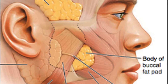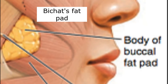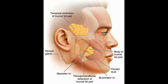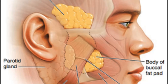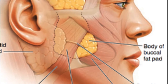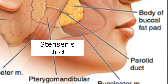For the content, you've got the buccal adipose body, or Bichat's fat pad, which extends into the temporal region. You've also got the buccal mucosa, which contains the parotid duct, also known as Stenson's duct.